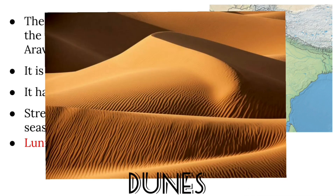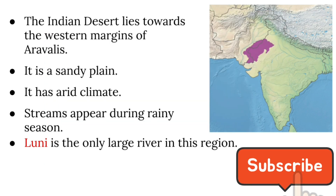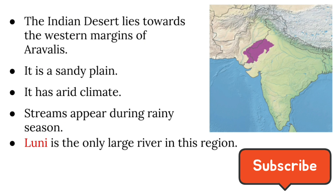Dunes are present in the Thar Desert, or the Great Indian Desert. Dunes are mounds of sand made by water or wind, mainly found in desert or coastal regions.